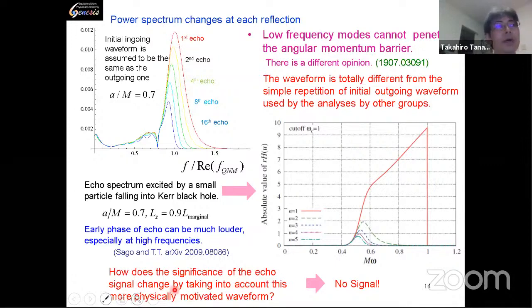We considered a more physically appropriate template using black hole perturbation theory to calculate the echo waveform. The spectrum of the first echo behaves differently from subsequent ones: the second, fourth, eighth, and sixteenth echoes show that high-frequency modes penetrate the angular momentum barrier more easily and disappear earlier, while low-frequency modes remain longer. The waveform is totally different from the simple repetition assumed in original analyses. When we searched using this more physically motivated template, we found no signal.